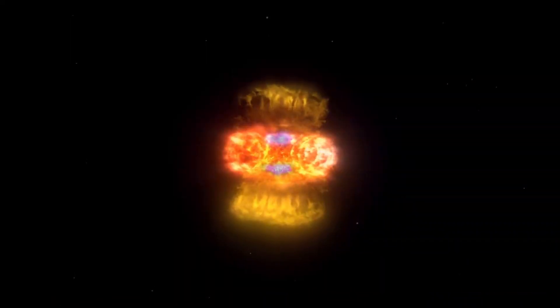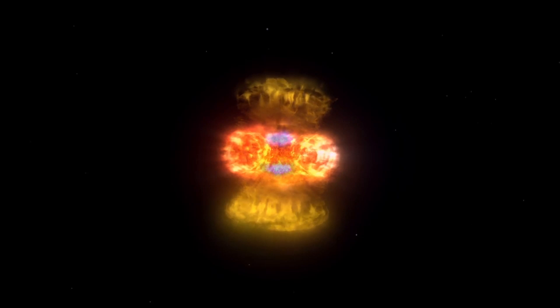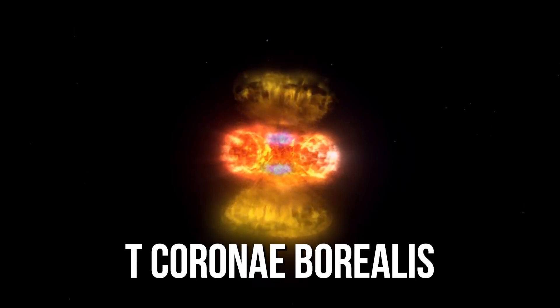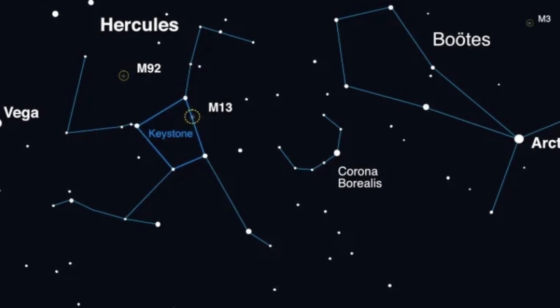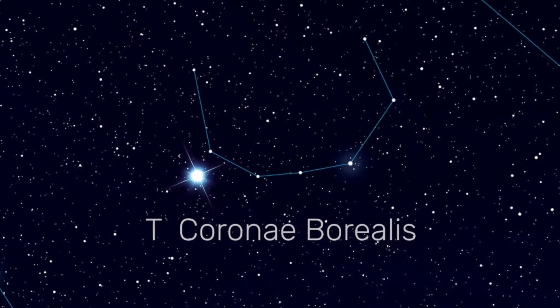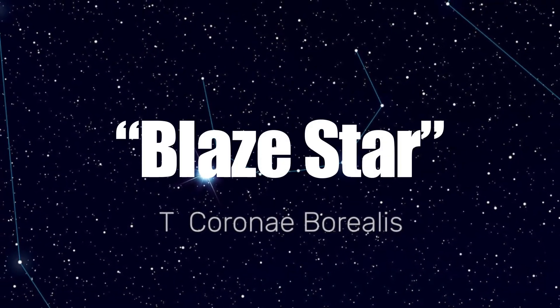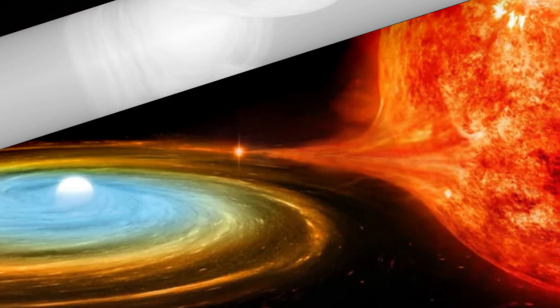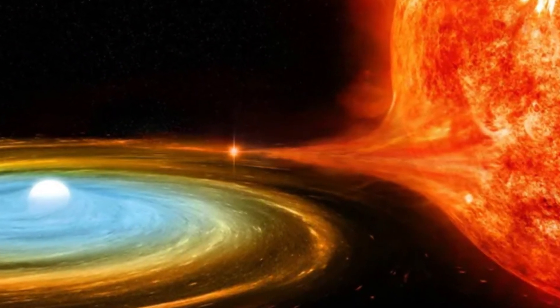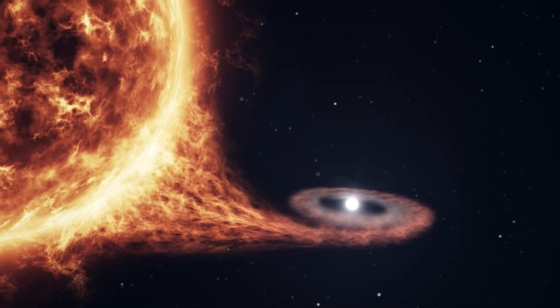The upcoming stellar eruption is expected to occur in the system known as T Corona Borealis, situated 3,000 light-years away from Earth. T Corona Borealis, otherwise known as the Blaze Star, is a binary system in the Corona Borealis that includes a dead white dwarf star and an aging red giant star.